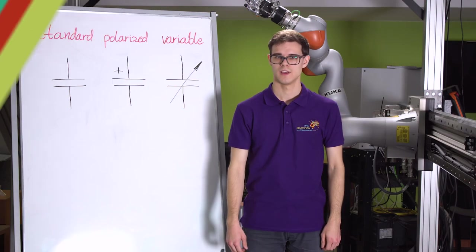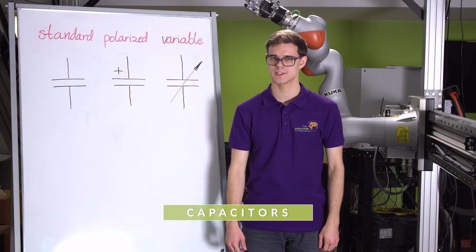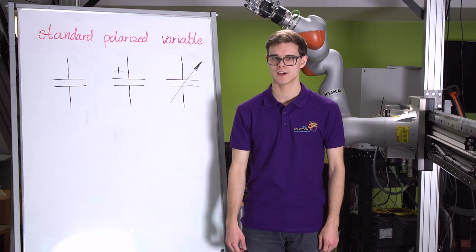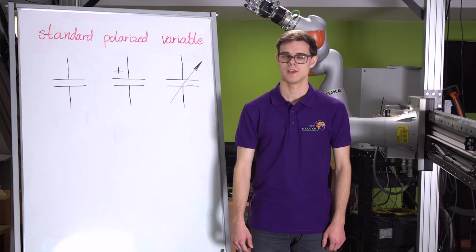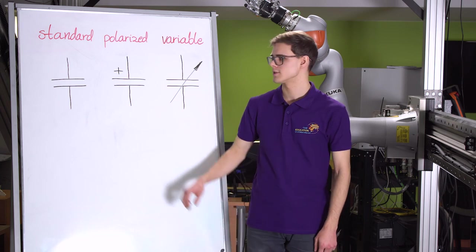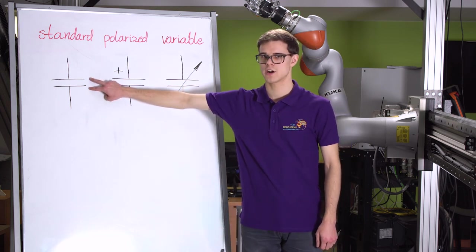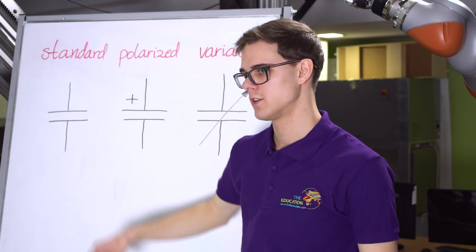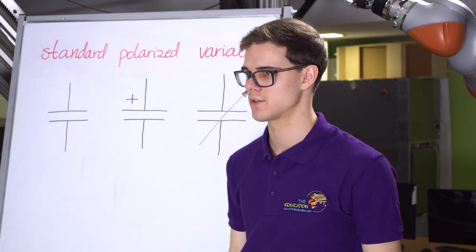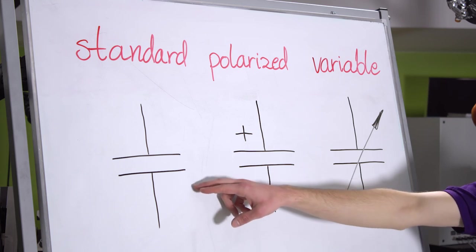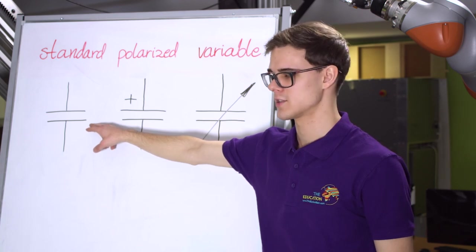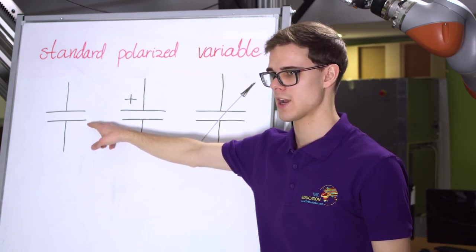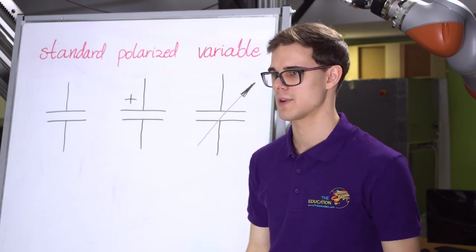Now it is time to get to know the second element without which many electronic devices would not be able to work: a capacitor. Capacitors gather and release specified portions of energy. The simplest capacitor consists of two electrodes which gather electric charge and an insulator between them. There are several types of capacitors. The symbol of a standard capacitor with fixed capacity does not have a specified polarization, so it doesn't matter which terminal is connected to the higher voltage — these are mainly ceramic capacitors.